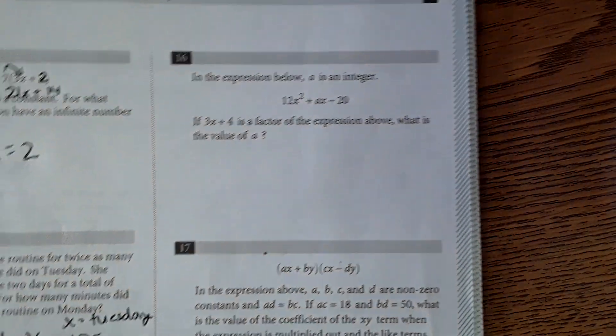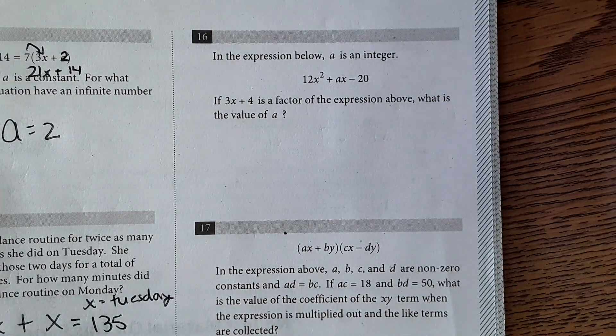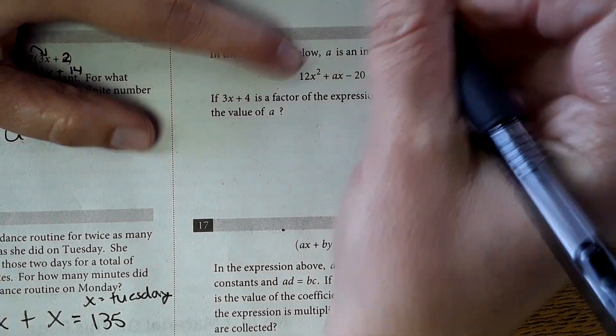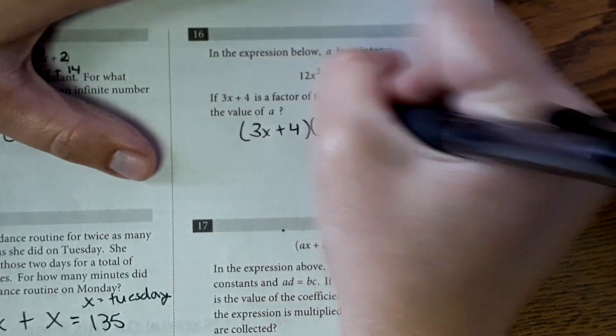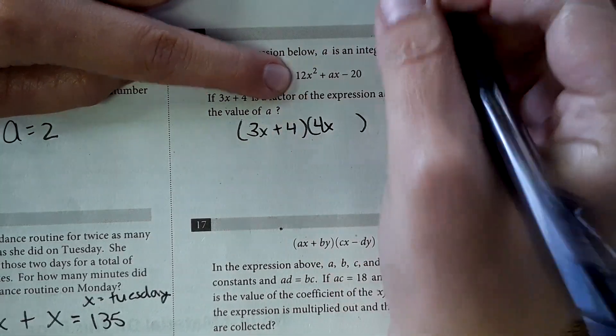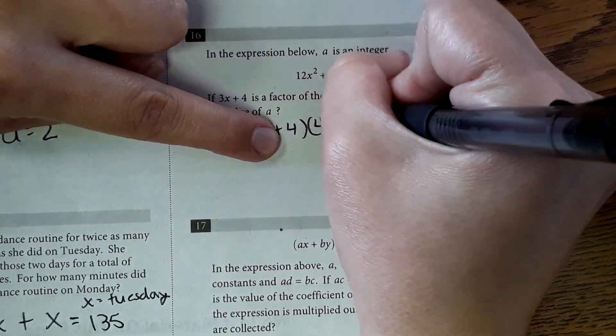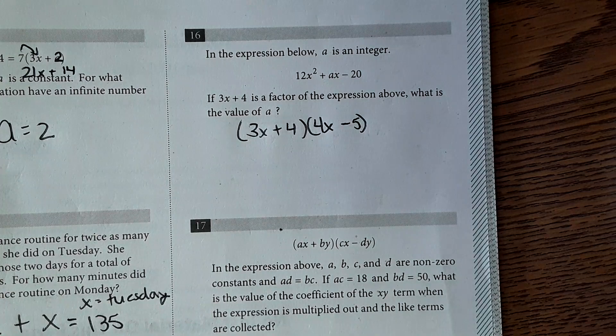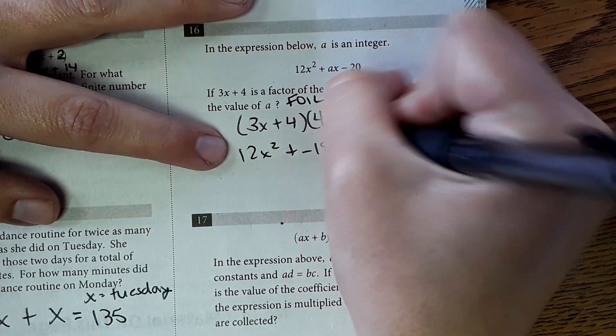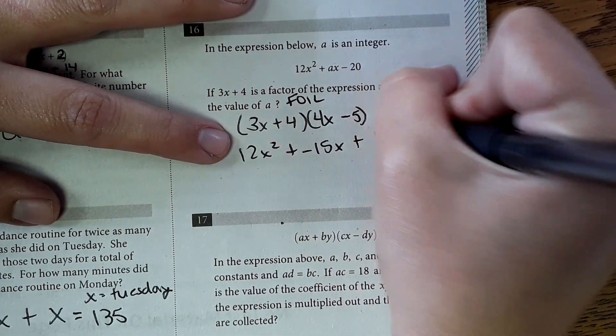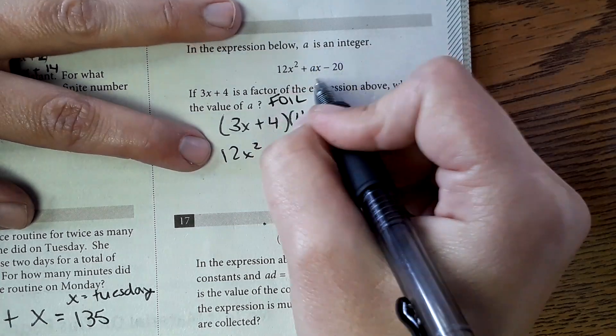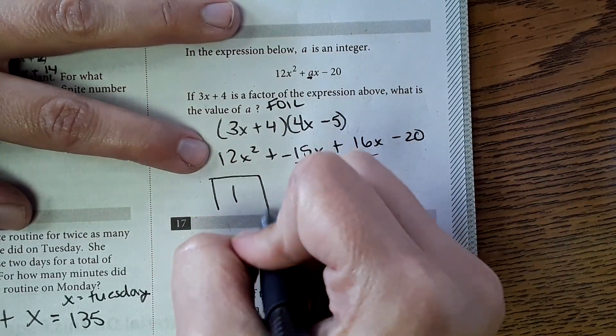Next question. In the expression below, a is an integer. If 3x plus 4 is a factor above, what is the value of a? Okay, so to factor this out, it's saying one of the factors is 3x plus 4. 3x times what would equal 12x squared? That would be 4x. And 4 times what would equal negative 20? That would be negative 5. So my factor here is 4x minus 5. Now I need to foil this out. So I get 12x squared. I get negative 15x, plus 4 times 4x is 16x, and then minus 20. Combine these like terms and I get 1x. It's asking for what a is and it would be 1. So 1 is what you would write in the box there.